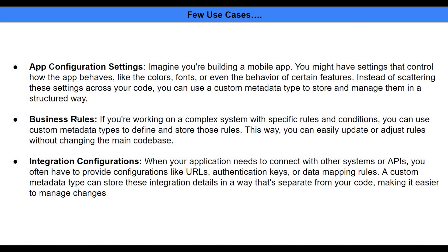Sometimes you want to configure business logic — think about tax calculation. There's a different taxation rate for each state, so you don't have to hard-code that in your code. Instead, use a custom metadata type and create multiple records, one per state, defining the taxation rate. That way, when the taxation rate changes, you can simply modify it in the custom metadata.